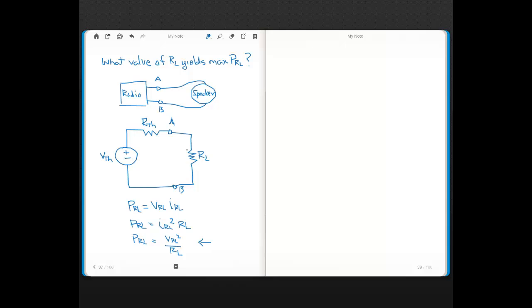So remember, VRL is the voltage across the load here. And one easy way to get VRL, since we have a series circuit, is with voltage division. So VRL by voltage division is just the Thevenin voltage times RL over RL plus RL.